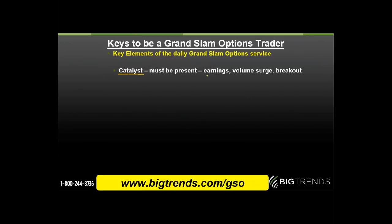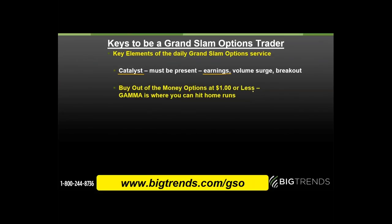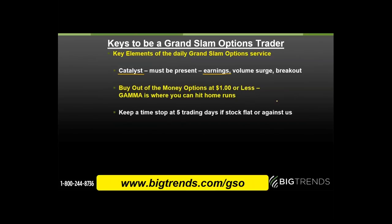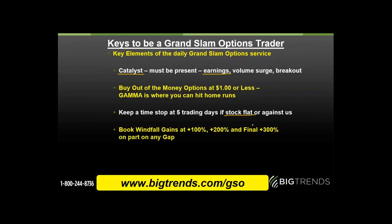Every trade has to have a catalyst — typically price-based in the short term, often combined with fundamental catalysts like earnings. We look for that breakout or breakdown after the earnings surprise. These are out-of-the-money options, meaning if you held to expiration without movement, you could lose 100% — that's why the five-day time stop is so important. When we catch it right, we can hit home runs. When wrong, we can't lose more than we put in. We'll keep our average loss quite a bit less than 100%. If the stock is flat after five days, you were expecting it to move for you — it didn't — you're wrong. Acknowledge that, get rid of the deadwood, and focus on the ones giving you big, quick windfalls.